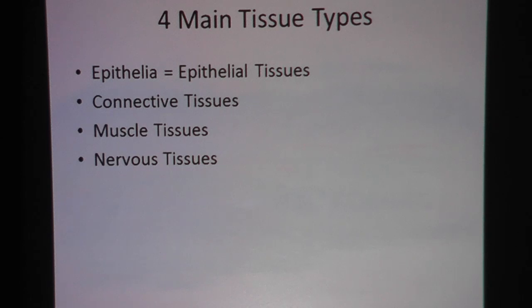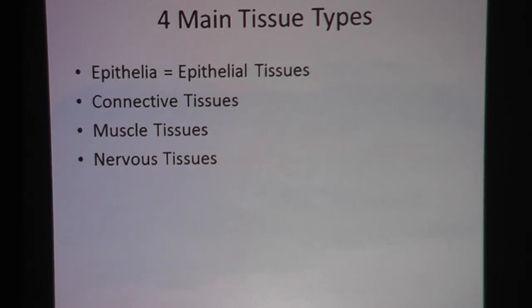Let's review the four main tissue types that we have in the body. There's epithelial tissues, connective tissues, muscle tissues, and nervous tissue.